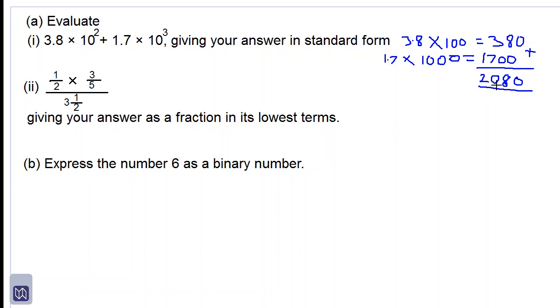And we now write 2,080 in standard form. So this is equal to 2.08. We move the decimal point three places to the left, so we multiply by 10 to the power positive 3. That's the answer for part 1.